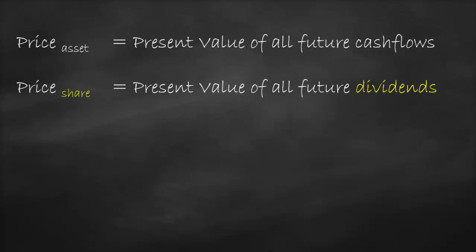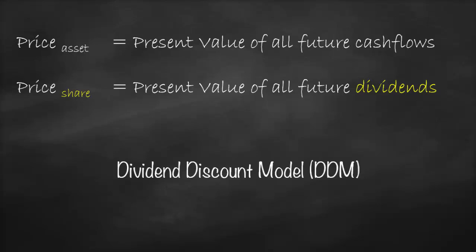Based on this formula, we can have a model called the Dividend Discount Model. Taking the first letter for each word, it will be DDM. The word 'discount' means get the present value, and 'dividend' means we need to get the present value of these future dividends, which will give us the share price. We have different types of dividend discount model.